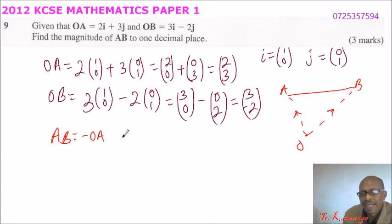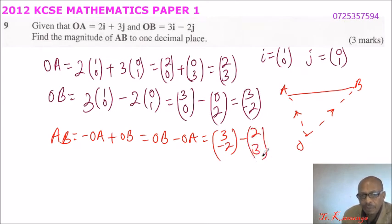So it equals minus OA, because we are moving against its direction, plus OB, which equals OB minus OA. But we already have our OB here, it equals (3, -2) minus (2, 3). So you subtract, and you will be able to get 3 minus 2 is 1, minus 2 minus 3, that will give you minus 5. So that is our vector, our vector AB equals (1, -5).